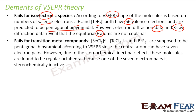Also, this theory fails for transition metal compounds. For transition metal compounds, the VSEPR theory predicts the shape to be pentagonal bipyramidal, but actually, using diffraction techniques, they found that the shape is octahedral.